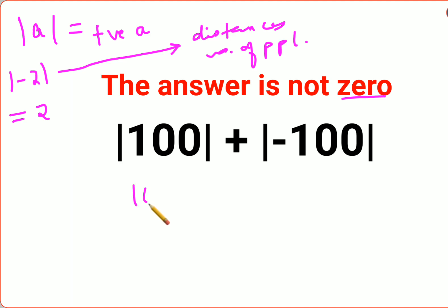So now 100, since 100 itself is a positive value, don't need to worry. So mod of 100 will get you 100. Mod of negative 100 will also get you just 100. So answer for this one is supposed to be 200 and not 0.